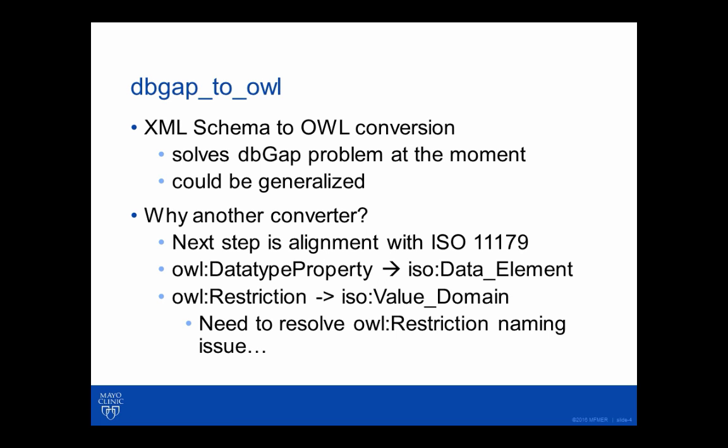The XML schema to OWL converter is not a complete schema to OWL converter — it covers the dbGaP problem and could be generalized, but we made no attempt to express everything you can say in XML schema in OWL. The reason for another schema to OWL converter is that we want to align this with the ISO 11179 metadata repository model. Specifically, where we have data type properties, we want to also declare them to be data elements, and the restrictions on the various values, we want to also declare them as value domains.